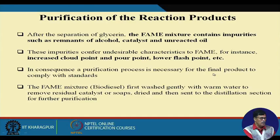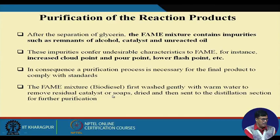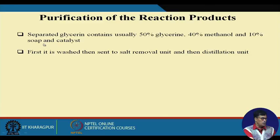The FAME mixture — biodiesel — is first washed gently with warm water to remove residual catalyst or soap, dried, and then sent to the distillation section for further purification. The glycerine contains about 50 percent glycerine, 40 percent methanol, and 10 percent soap and catalyst. The methanol can be separated through distillation, and soaps and catalyst can be removed by washing with water.